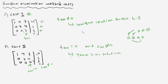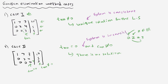If a linear system has a solution — whether unique or not unique — it is called a consistent system. If the system has no solution at all, then the system is not consistent, which means it is inconsistent. That is the second case.